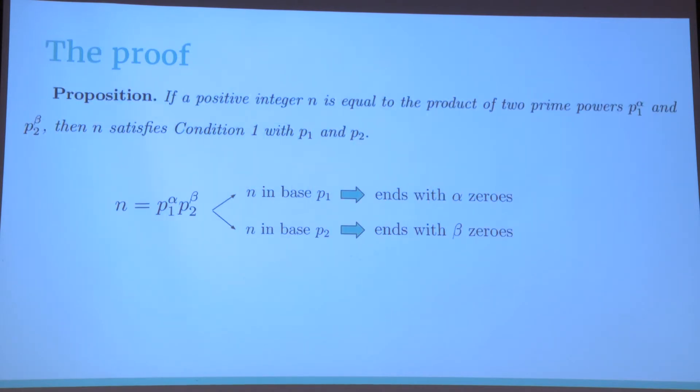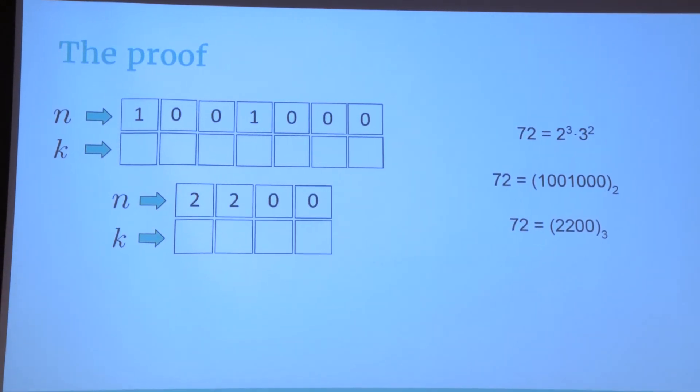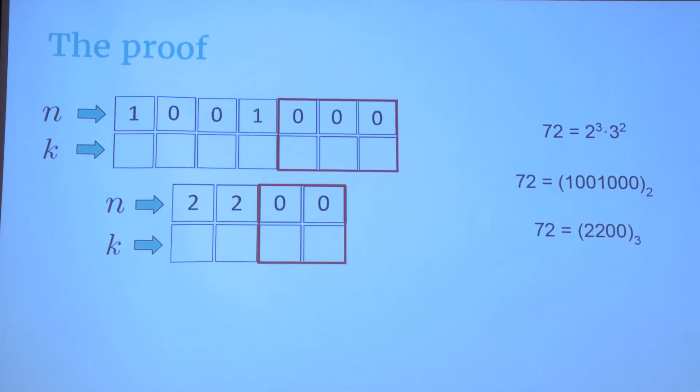Now let's go back to the proof. Recall that we wanted to see that if n is equal to p1 to the alpha times p2 to the beta, when p1 and p2 are primes, then n satisfies condition 1 with p1 and p2. The first thing that's important to see is that the base p1 representation of n finishes with alpha zeros, because alpha is exponent. In the same way, the base p2 representation of n finishes with beta zeros. For example, 72 is 2 to the 3 times 3 to the 2, and then the base 2 representation of 72 ends with 3 zeros, because it can be divided 3 times by 2 until we run out of factors.